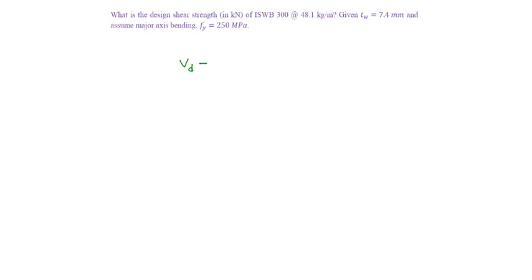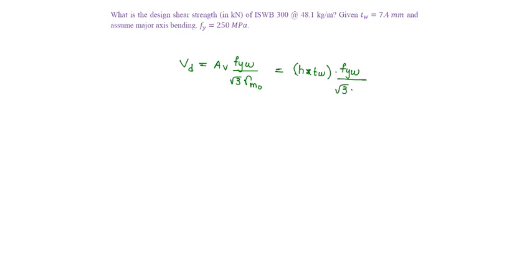Design Shear Strength Vd is equal to Av into fyw by root 3 into gamma M0, where Av is the overall depth into thickness of the web for major axis bending, into fyw by root 3 into gamma M0.